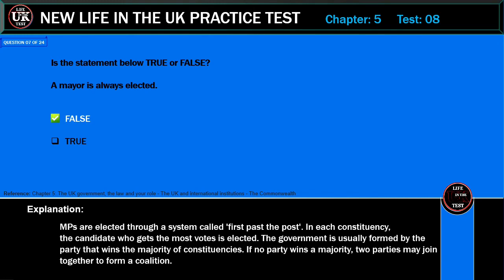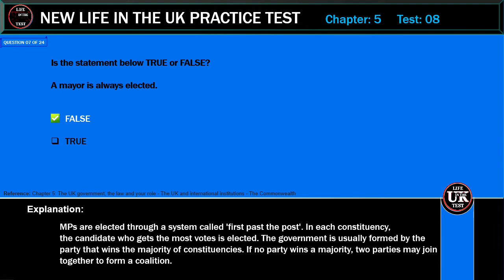Is the statement below true or false? A mayor is always elected. Correct answer: False. Explanation: MPs are elected through a system called first past the post. In each constituency, the candidate who gets the most votes is elected. The government is usually formed by the party that wins the majority of constituencies. If no party wins a majority, two parties may join together to form a coalition.